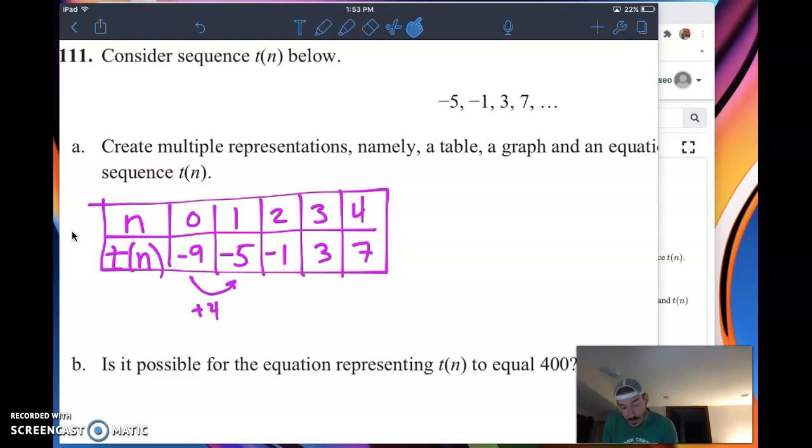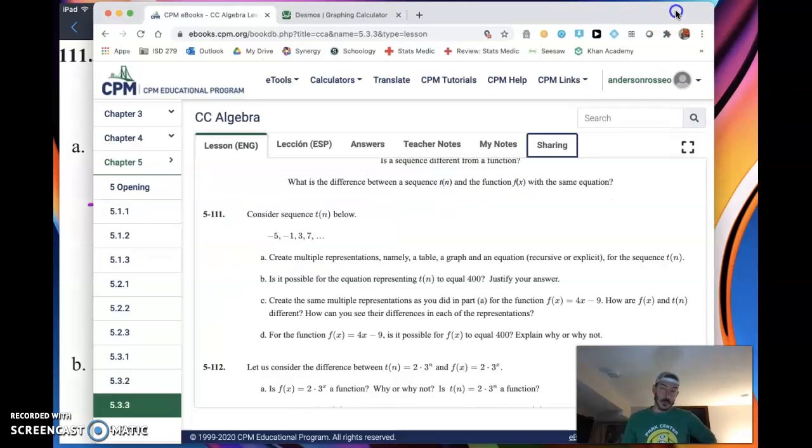There is that y-intercept value, and that allows me to take the table and throw it into an equation form. I can write it as t of n equals the slope, or that common difference, 4 times n, and then plus the y-intercept. Because my y-intercept is negative, I'll write minus 9. There's my table representation, there's my equation representation.